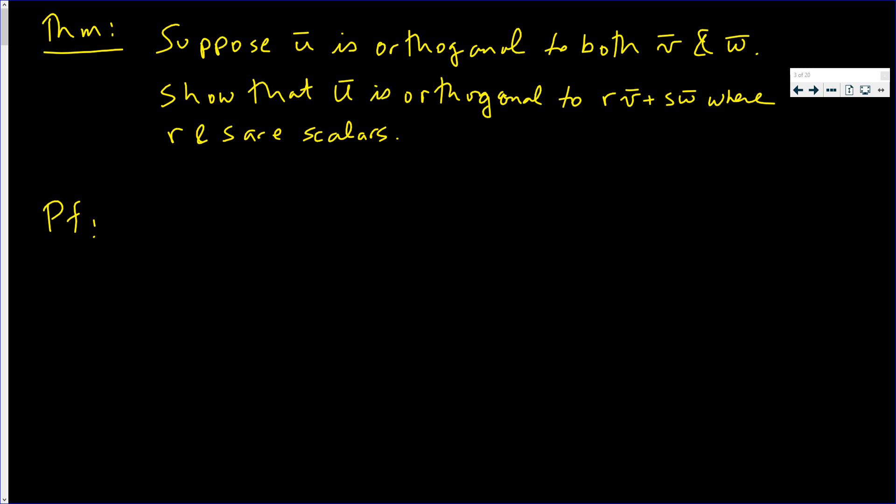This video we're going to show that if u is orthogonal to both v and w, then u is orthogonal to rv + sw where r and s are scalars.